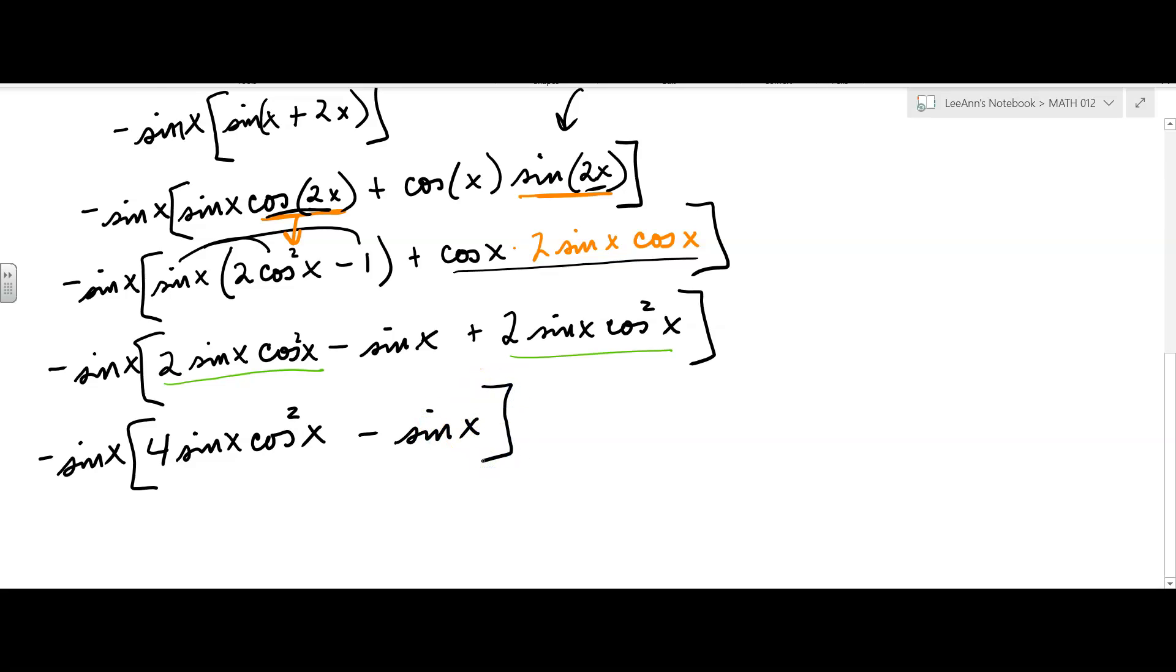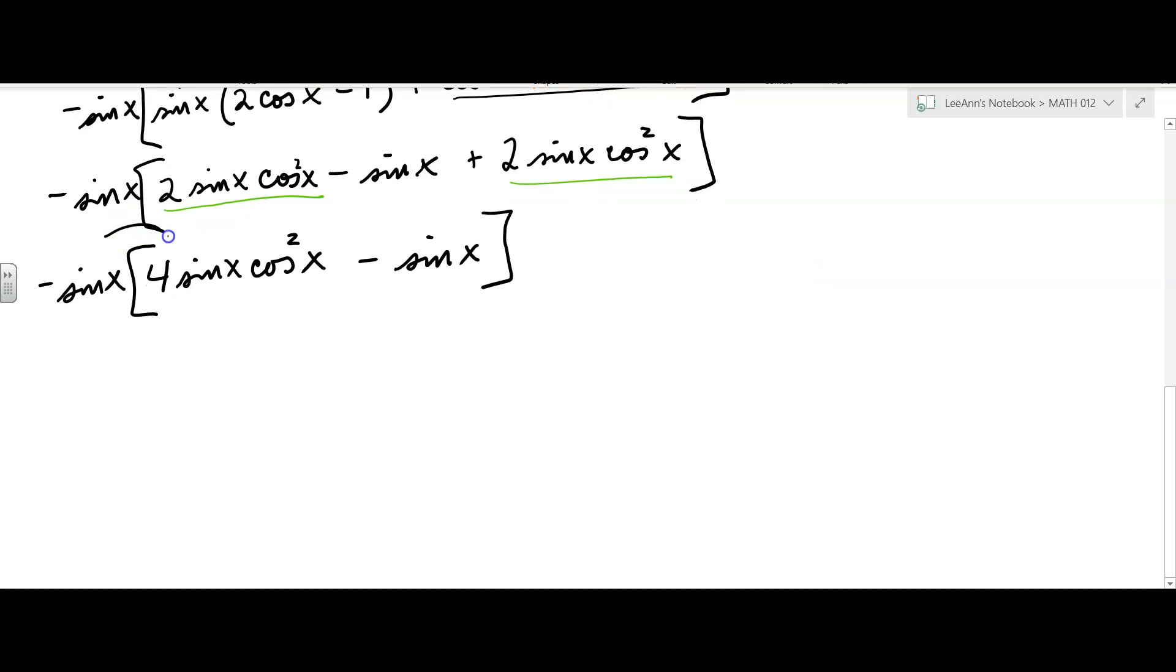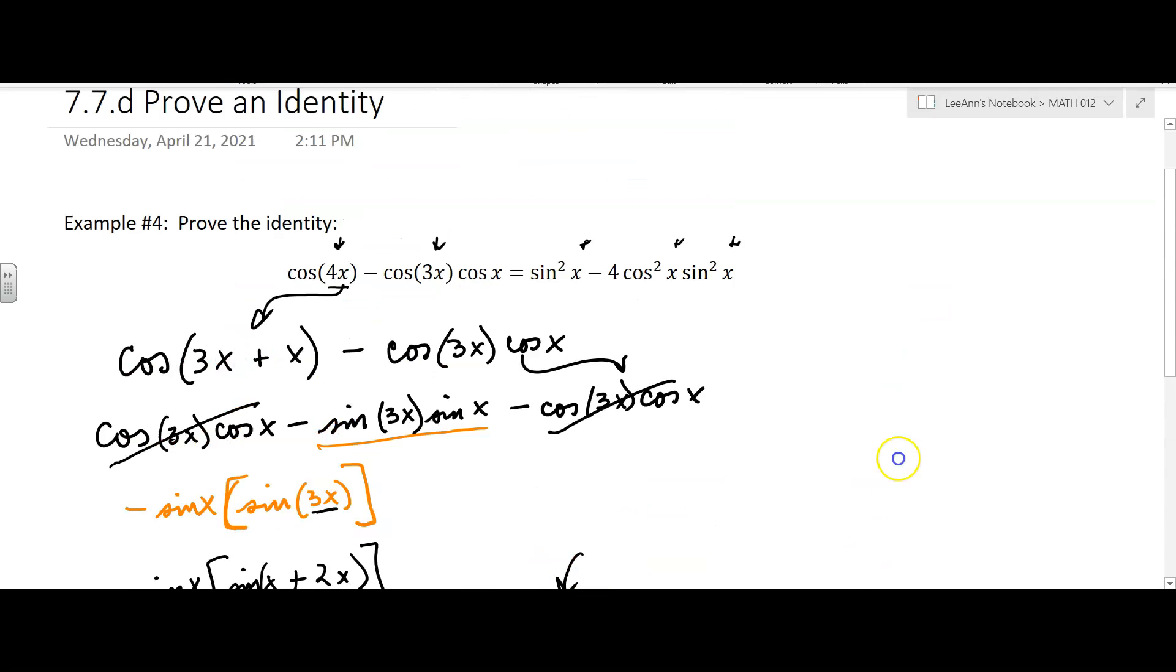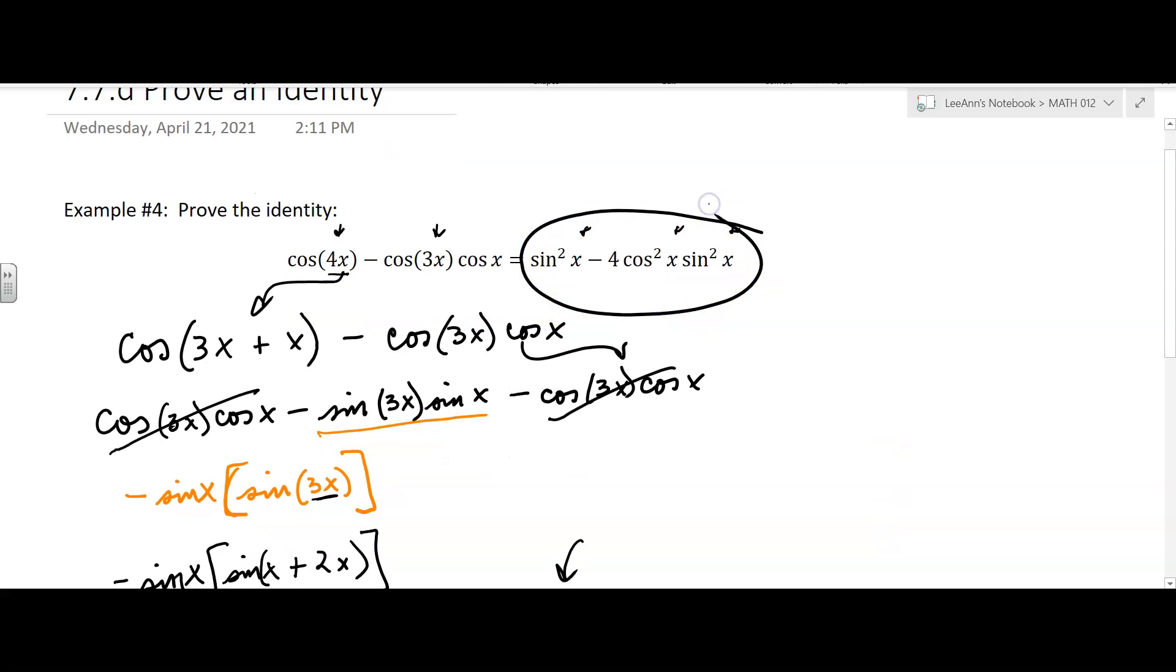And then we're going to distribute. So, distributing here, that looks like a negative 4 sine squared x cosine squared x. And then distributing over here, that's going to make it plus sine squared x. And then if I rearrange it, sine squared x minus 4 sine squared x cosine squared x, which is what we're supposed to try to get. You have to scroll back. I'll scroll back up. It's way up there. But it's right there. That's what we were trying to get.